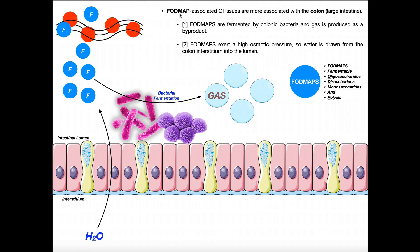When somebody consumes a food that has gluten, it probably also has FODMAPs. The gluten itself may cause no issues whatsoever. However, the FODMAPs have two mechanisms. First, they can be picked up by intestinal bacteria — particularly in the large intestine or colon, where there are a lot of bacteria, gut flora. These bacteria can pick up the FODMAPs and metabolize them through fermentation. If you've taken a microbiology class, you know that fermentation often produces gas.